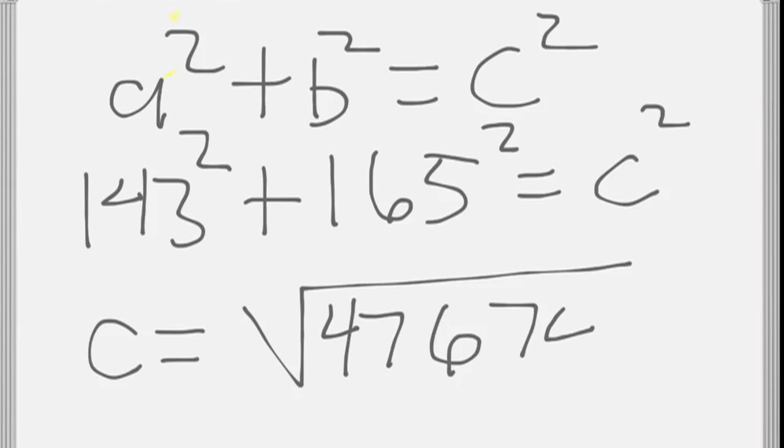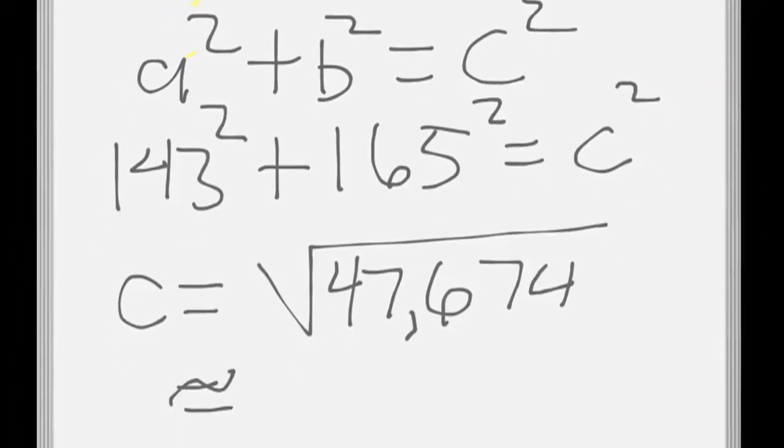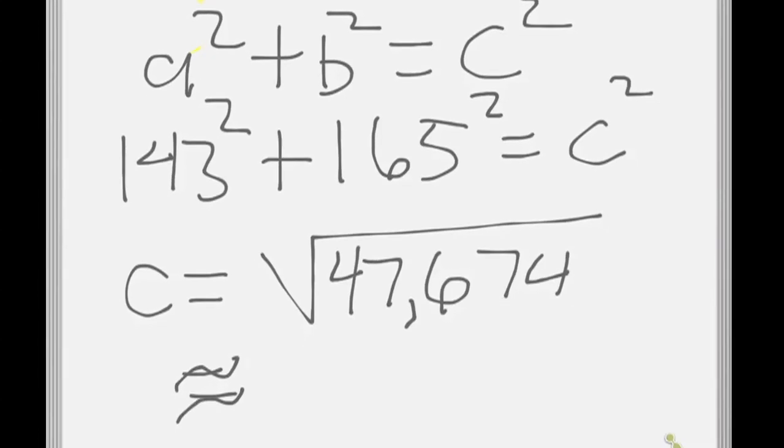47,674. Tell me that that's a perfect square. Oh dang. So okay. So what is that about? 218? To the nearest mile? 218.3? So we'll say 218. 218. What are my units? Miles. Miles. Miles.